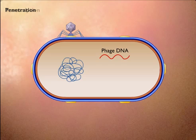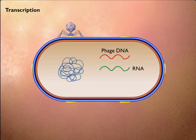In the transcription stage, the phage DNA is transcribed into messenger RNA, which is then translated into phage proteins.